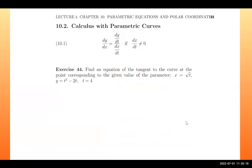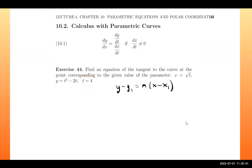For this example, they want us to find an equation of the tangent to the curve corresponding to the given value of the parameter x equals √t at t equal to 4. We need to find an equation; we can use point-slope form.